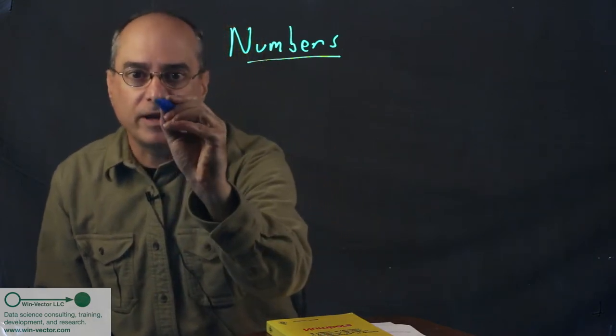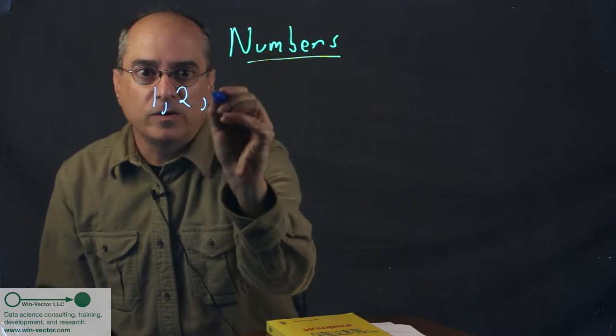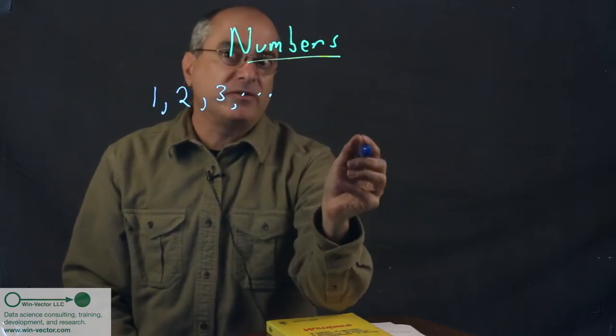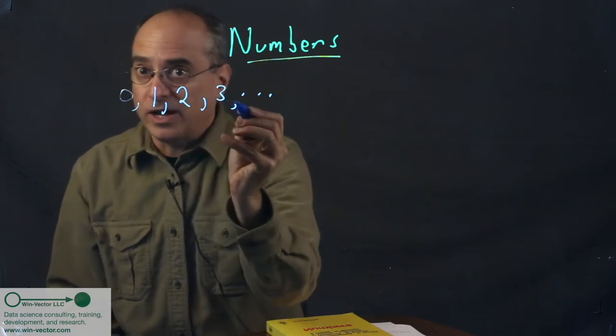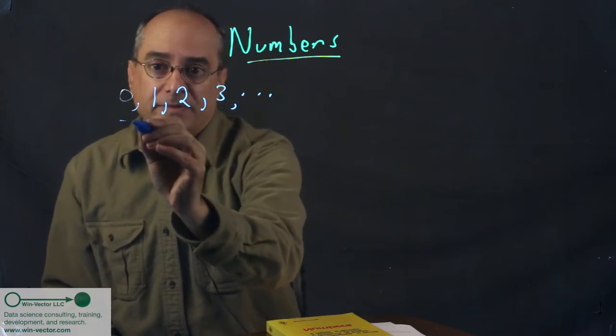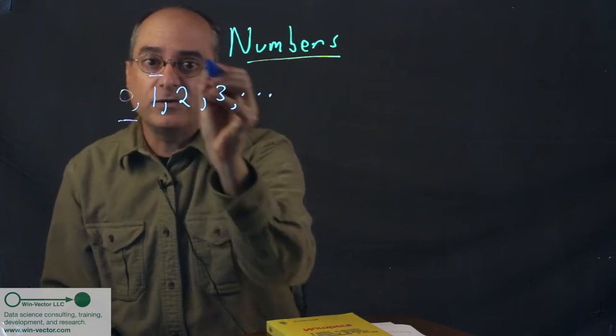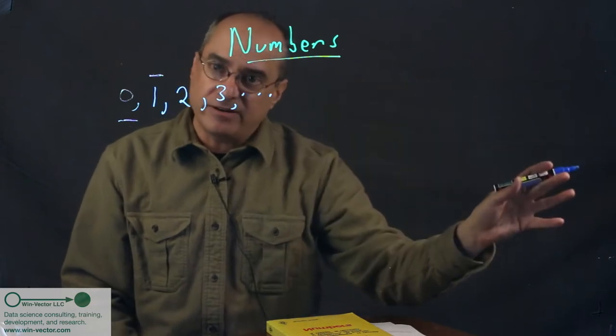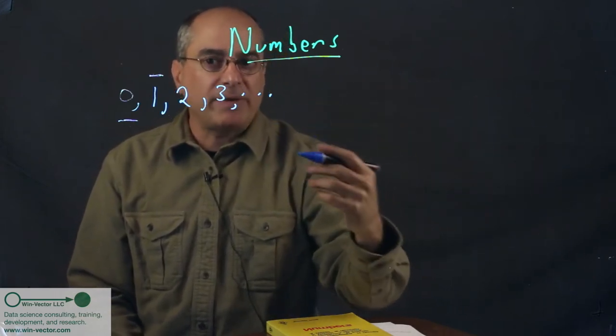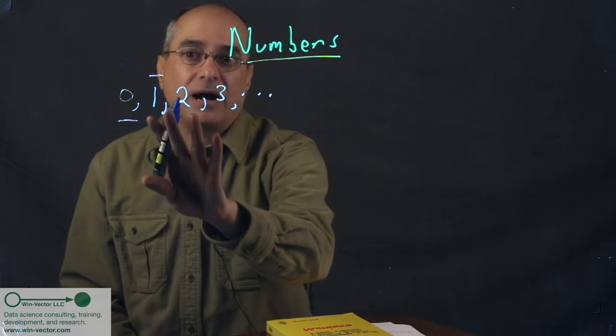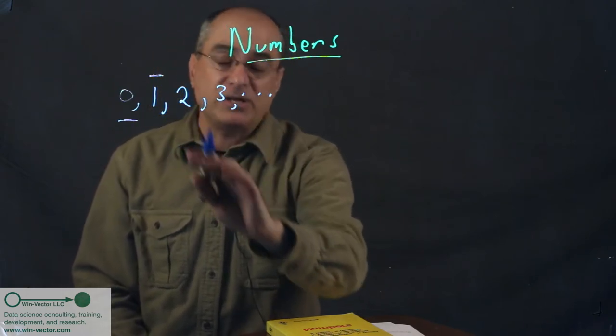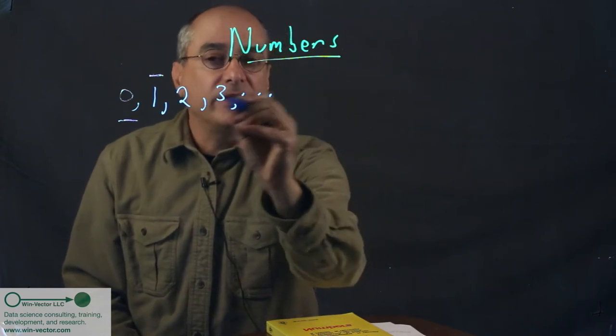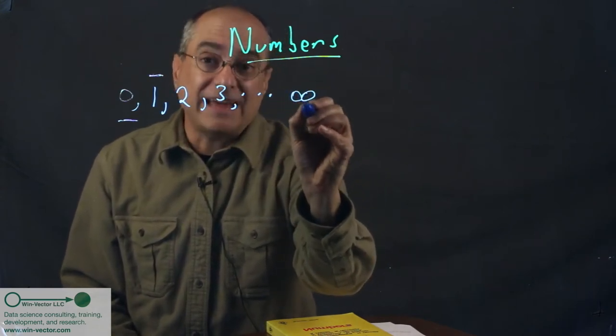So we can start with counting numbers like 1, 2, 3. And already we have a couple of issues. Is zero such a number? The Greeks' formal mathematics even had some controversy as whether 1 was a number of the same nature as the later numbers. Obviously they knew how to count, but for certain formal mathematics, 1 had enough different properties that they were actually somewhat suspicious of it.